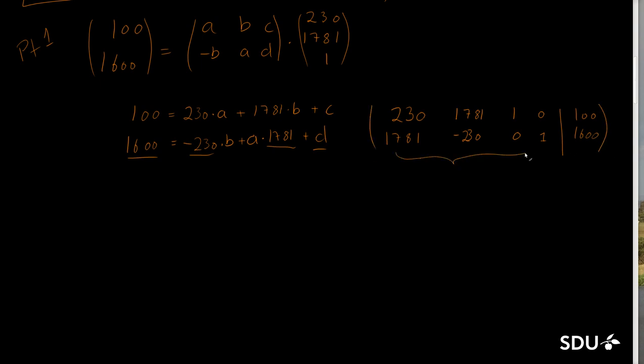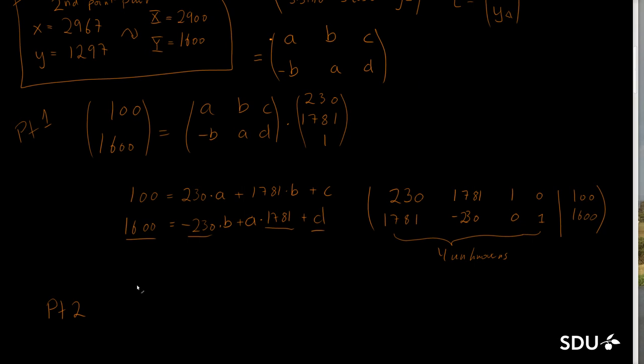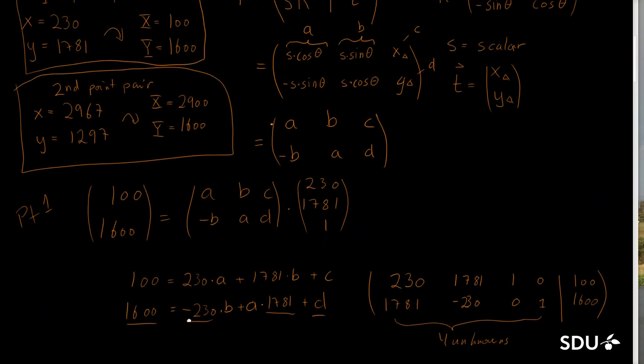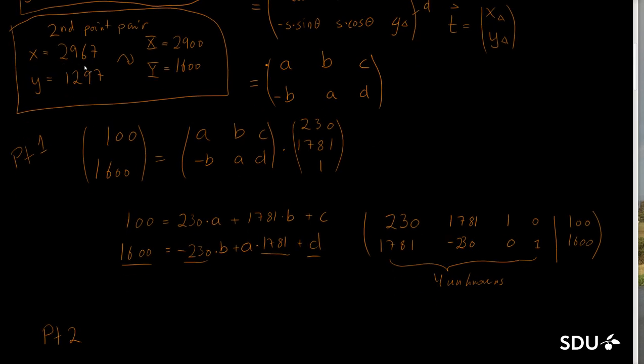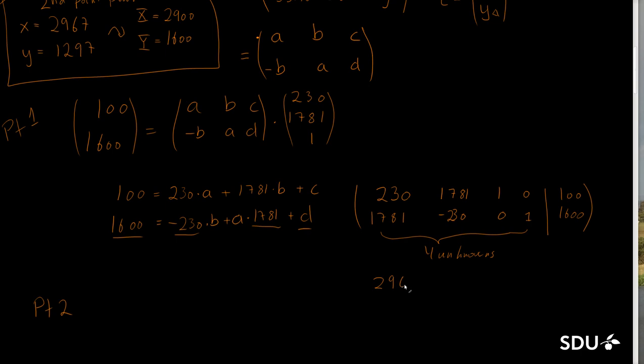Now we have two equations with four unknowns. We need to solve this, but of course this is not enough. We need two additional equations. So we can do the exact same thing from point 2, which will give us the following. The x value is 2967, and we have the y values which were 1297. And the target coordinates were 1900 and 1600.